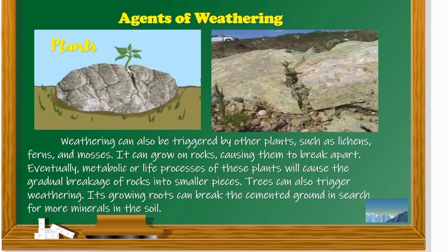Plants: weathering can also be triggered by plants such as lichens, ferns, and mosses. They can grow on rocks, causing them to break apart. Eventually, the metabolic or life processes of these plants will cause the gradual breakage of rocks into smaller pieces. Trees can also trigger weathering, as their growing roots can break the cemented ground and search for more minerals in the soil.